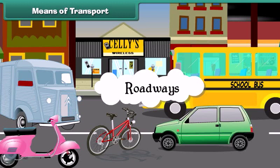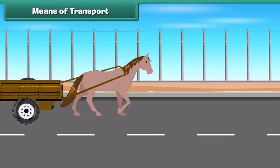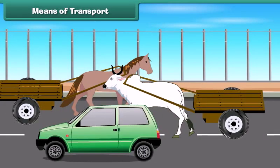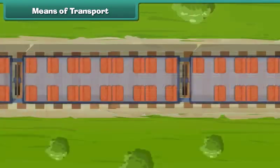What is meant by the term roadways? A roadway is a thoroughfare route or the way between two places which typically has been improved to allow travel by some conveyance, including a horse, a cart or a motorized vehicle.